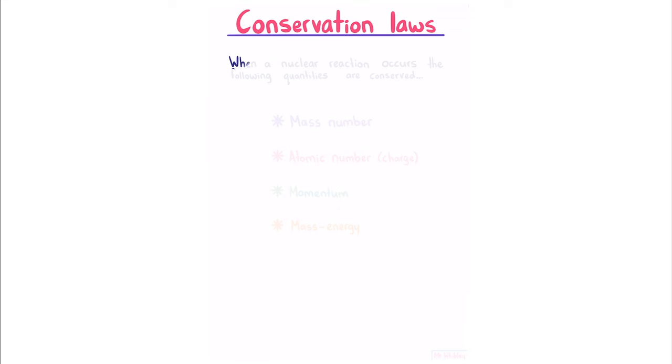Conservation laws. When a nuclear reaction occurs, the following quantities are conserved: mass number, atomic number or charge, momentum, and mass energy.